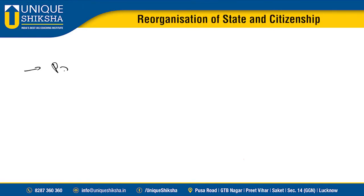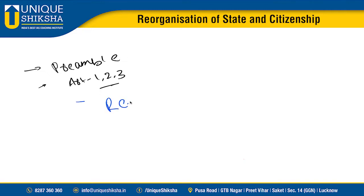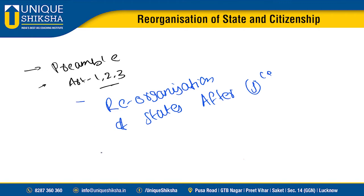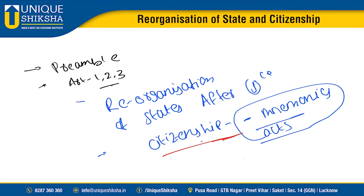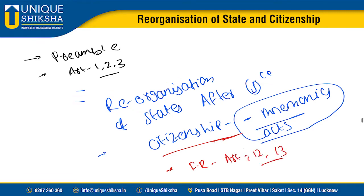Welcome back. In the previous video we discussed about the Preamble, Article 1, Article 2, and Article 3. In this video we will be discussing the reorganization of states after independence, and then citizenship. I have given mnemonics for all the acts to make them simpler. In citizenship also I will be giving mnemonics. Then we'll talk about some features of fundamental rights — Article 12 and if possible Article 13.